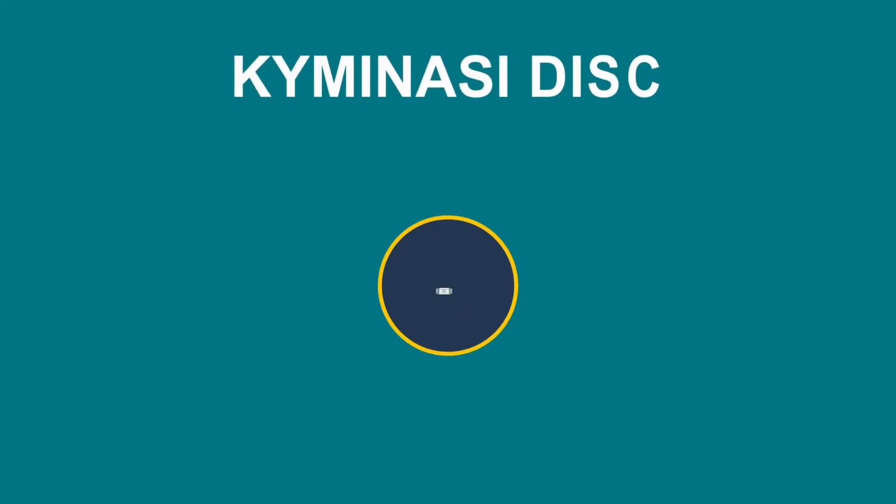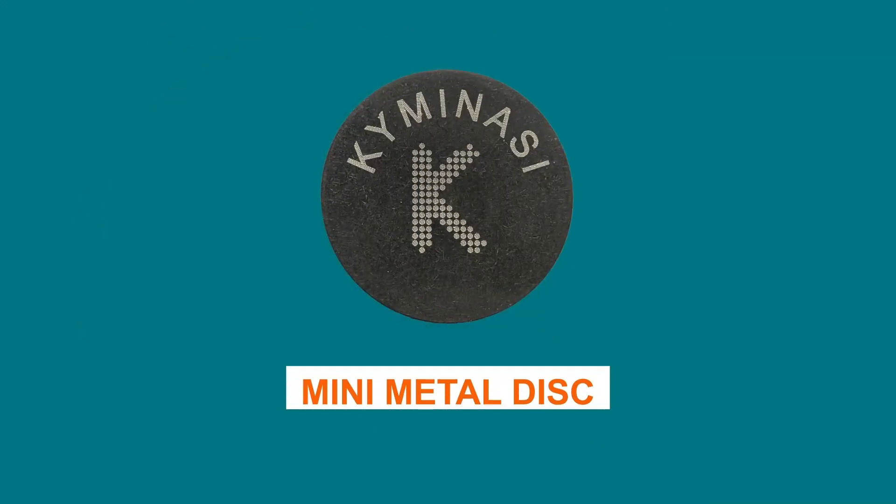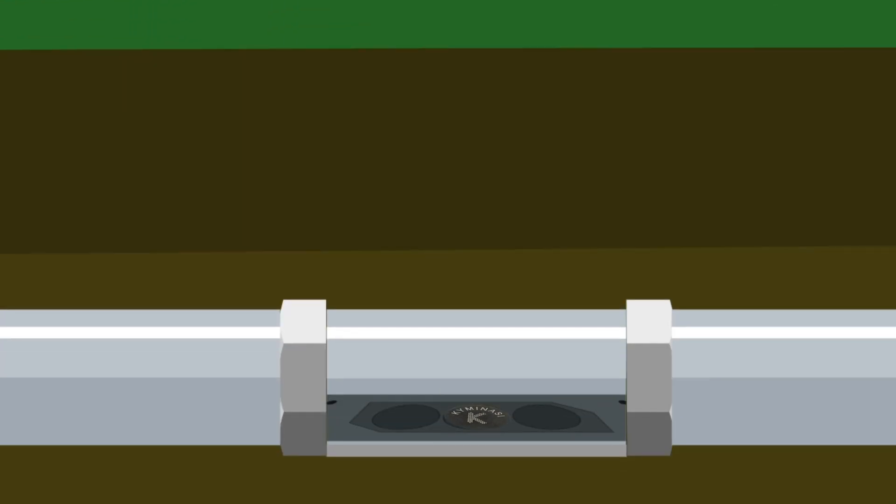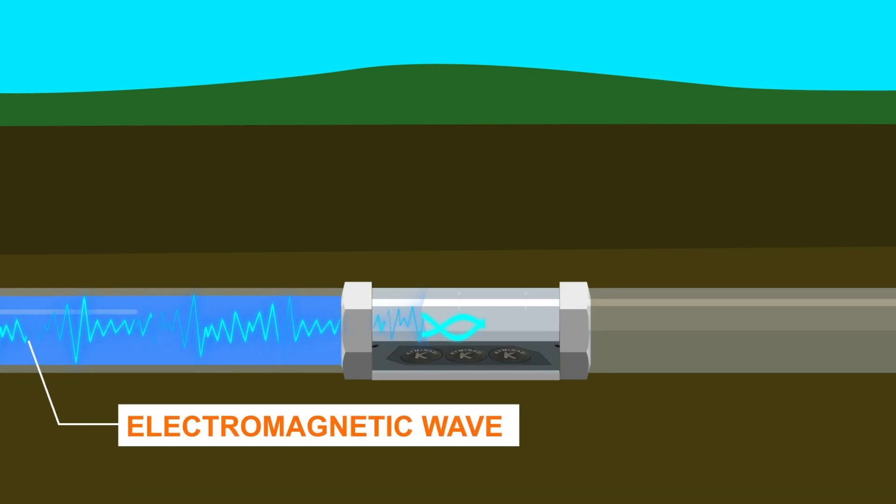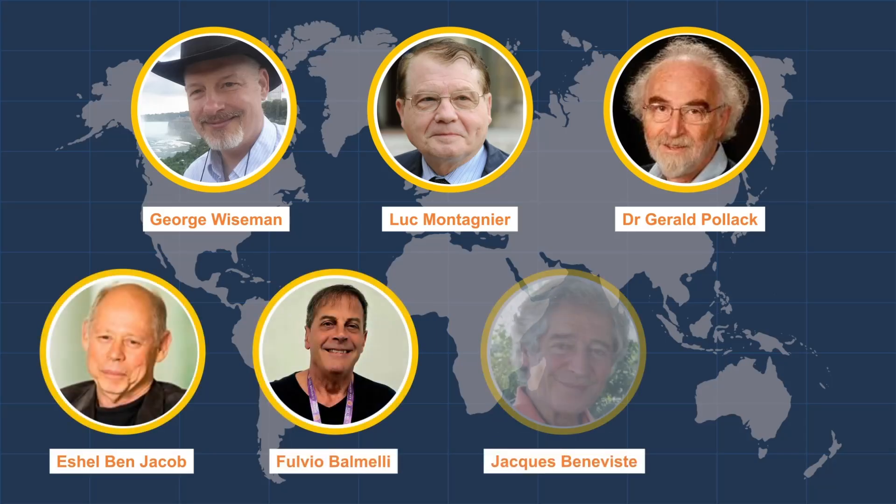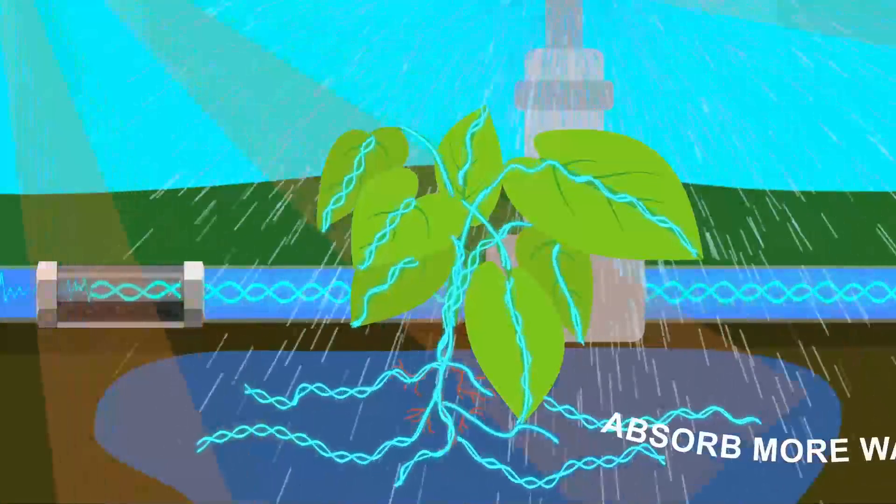The Kimanasi disc, KD, works almost the same way. Information is stored on a mini metal disc, but it's not read by a machine. Instead, it is read by the electromagnetic wave created by flowing water that passes through the metal pipe containing the Kimanasi disc, bringing that information, which we call signals, to the plants and soil being irrigated. Now that may sound strange, but scientists around the world have found that water can actually store information from electromagnetic waves and pass it on.